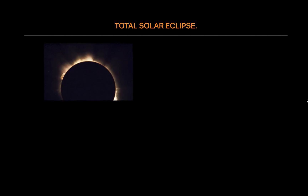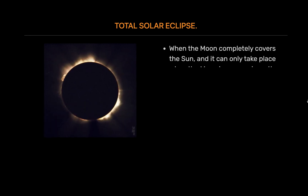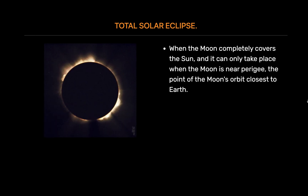Total solar eclipse. A total eclipse happens when the dark silhouette of the Moon completely covers the intense bright light of the Sun. Only the much fainter solar corona is visible during a total eclipse.